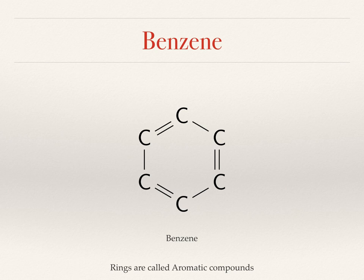Benzene is the archetype aromatic compound. Most linear molecules have no smell, but most molecules containing the benzene ring structure have a smell, and that's just where the name aromatic comes from. So now we know alkanes have single bonds, alkenes have double bonds, and aromatic compounds have rings.